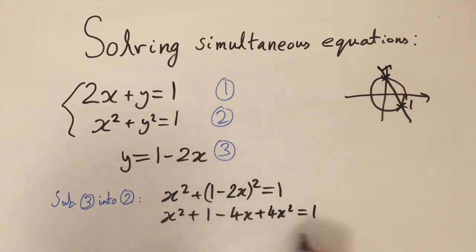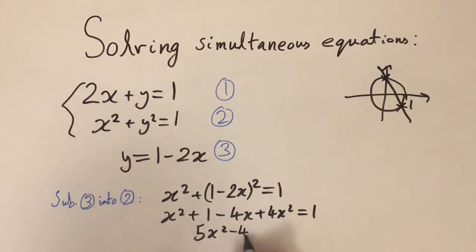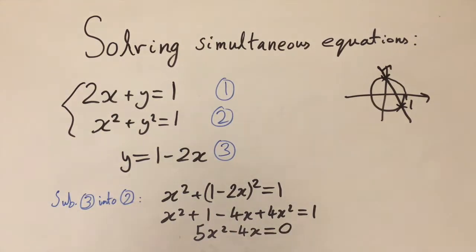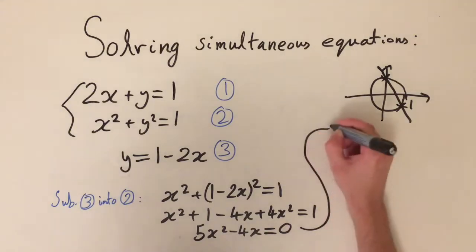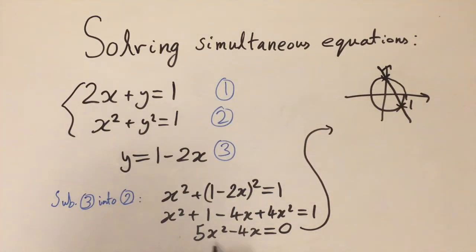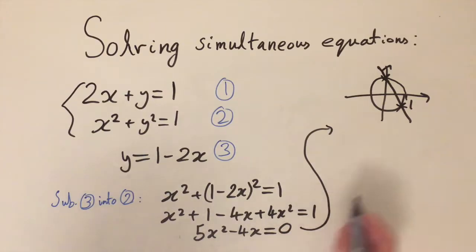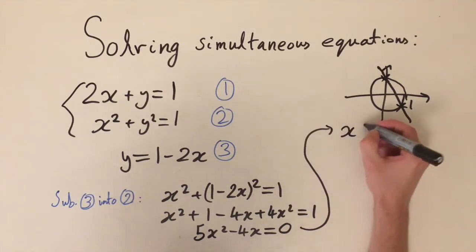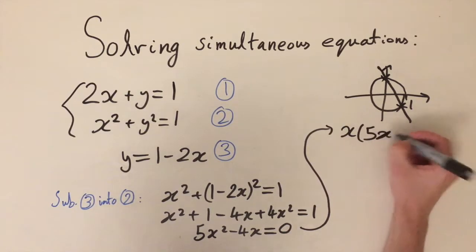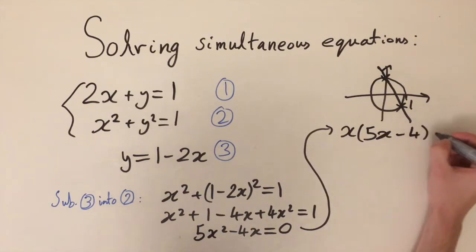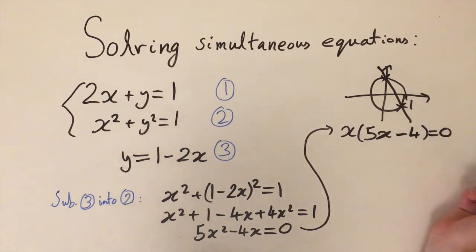Simplifying by collecting terms, we get 5x squared minus 4x, and the ones cancel out when we subtract 1 from both sides, giving 5x squared minus 4x equals 0. Both terms involve x, so this is a quadratic with no constant term, which makes it much easier to solve — we can just factorize an x out.